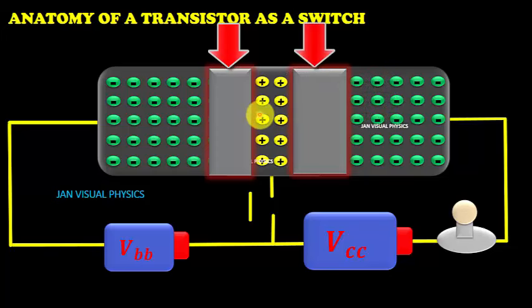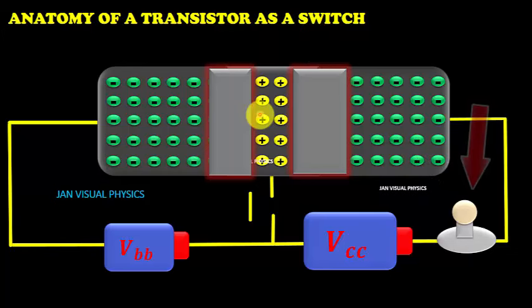A depletion region behaves as an insulator. No current can pass through the transistor and our load is OFF. In this state transistor behaves as an OFF switch.